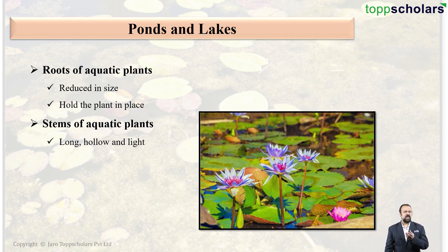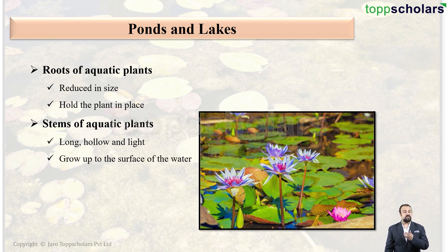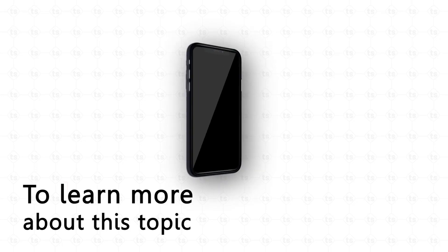Why exactly are they long? They are long so that the plant can rise up through the water and go up into the air. Also, the stems are hollow and light, which helps them to float on water and grow up to the surface.